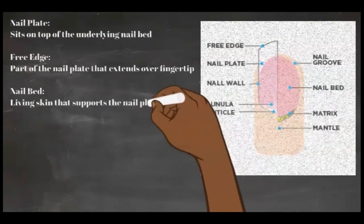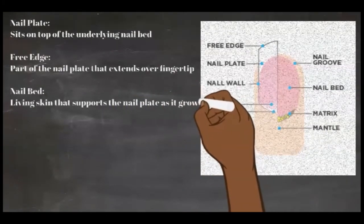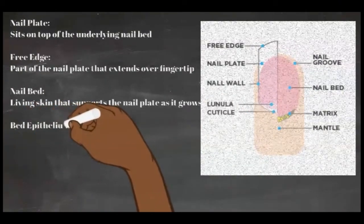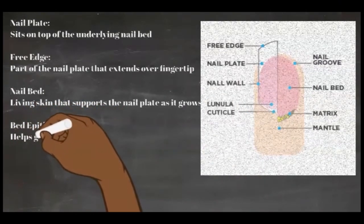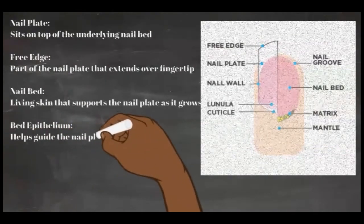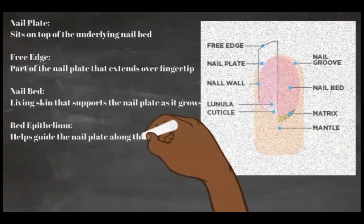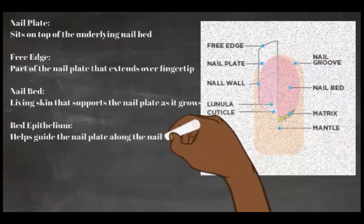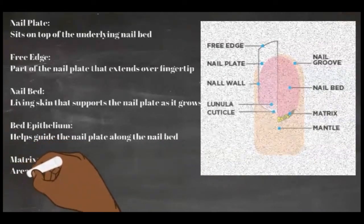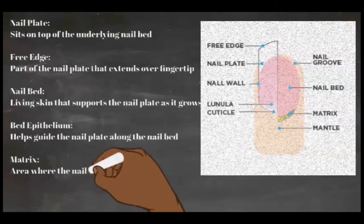The matrix is the area where the nail plate cells are formed. It is composed of matrix cells that produce other cells that become the nail plate. As long as it is nourished and kept in healthy condition, the matrix will continue to create new nail plate cells. The matrix extends from under the nail fold at the base of the nail plate.